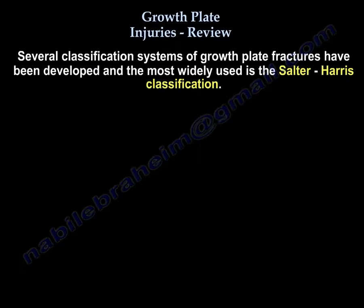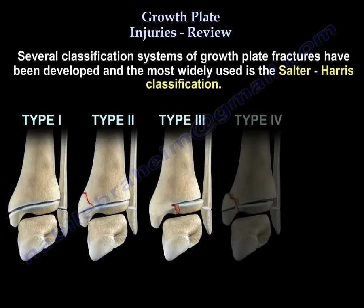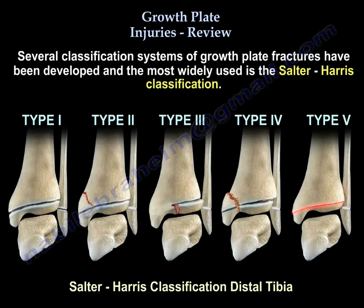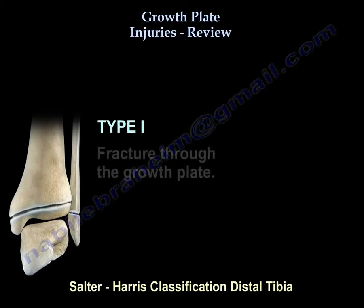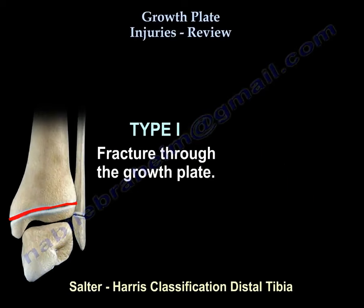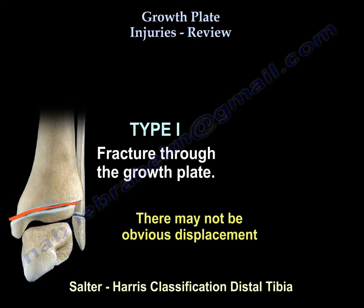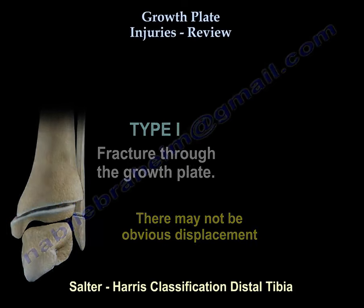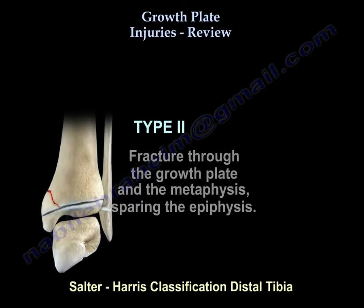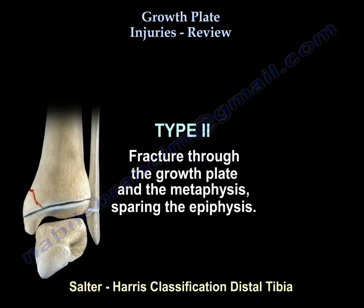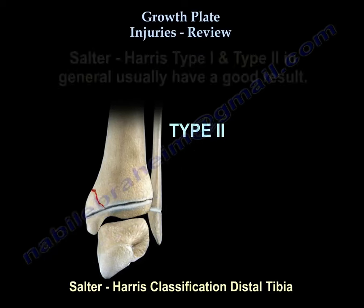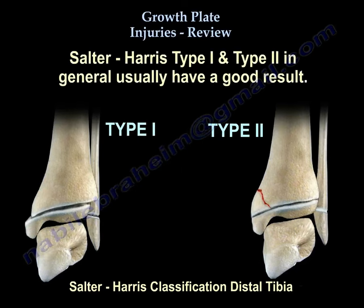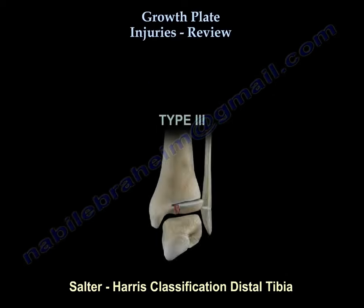We need to be familiar with the Salter-Harris classification of growth plate injuries. There are five types. Type 1 is a fracture through the growth plate; there may not be obvious displacement. Type 2 is a fracture through the growth plate and the metaphysis, sparing the epiphysis. Type 1 and Type 2 usually have a good result.